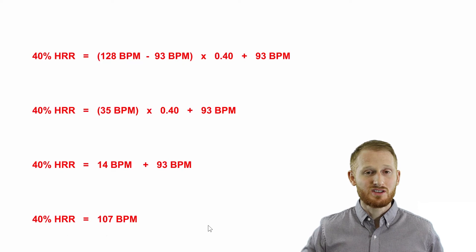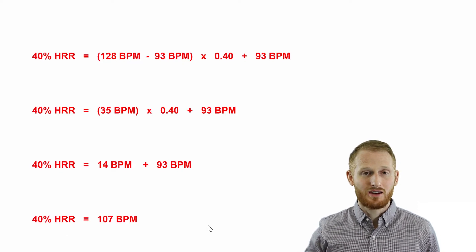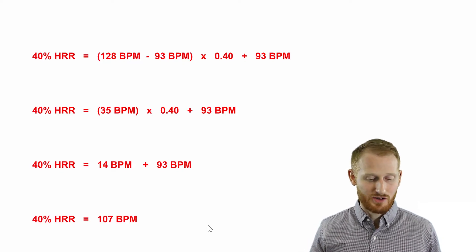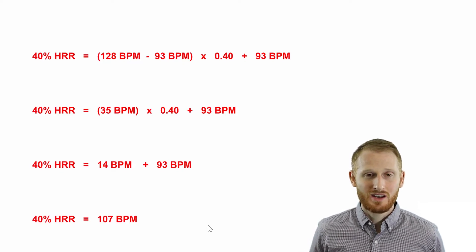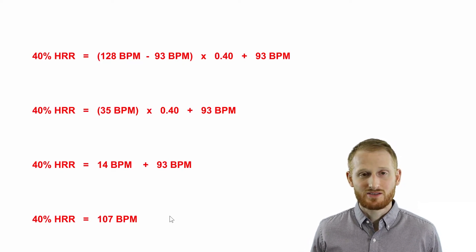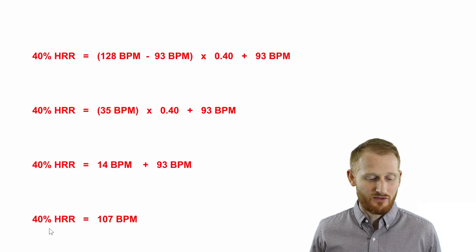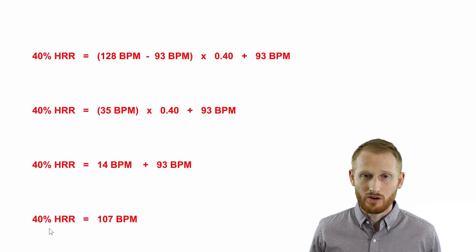So if she's walking and her heart rate is 107 beats per minute, that means she's walking at an exercise intensity of 40% of heart rate reserve. I hope that was useful. If you have any questions, put them in the comment section below and I'll try to get back to you. Otherwise, please come back and watch another video. Thanks.